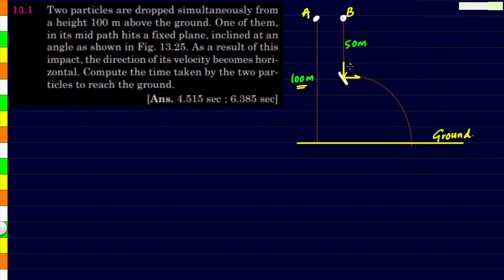The twist here is that the second object strikes a surface like this, and after striking, whatever was the velocity at the time of strike, which is vertical, the same velocity becomes horizontal.